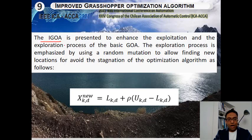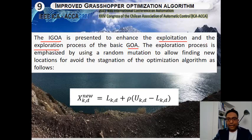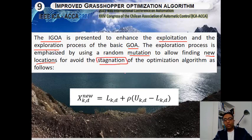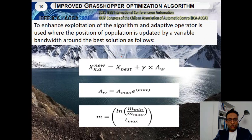We present the IGOA — Improved Grasshopper Algorithm — to enhance exploration and exploitation. We enhance both exploration and exploitation processes of the basic GOA. The exploration process is infused by using a random mutation to allow finding new locations and avoid stagnation, as shown in this equation. To enhance exploitation, an adaptive operator is used where the position of the population is updated by a variable bandwidth through the best solution, as shown in this equation.